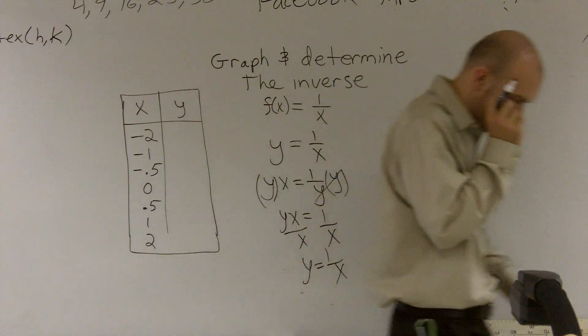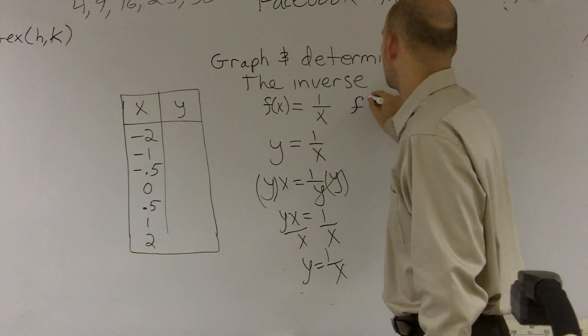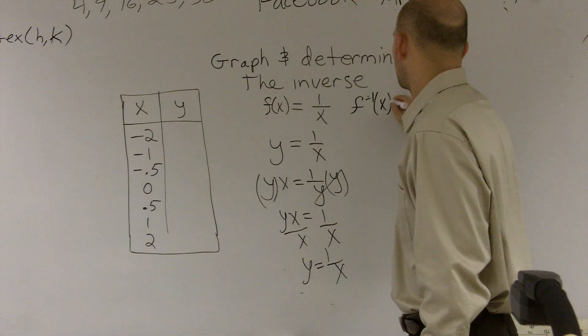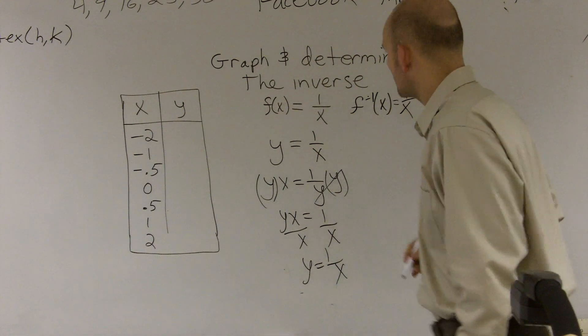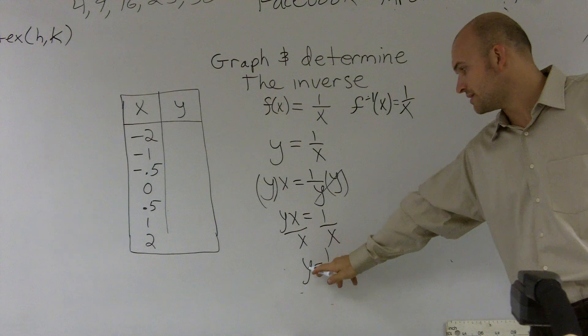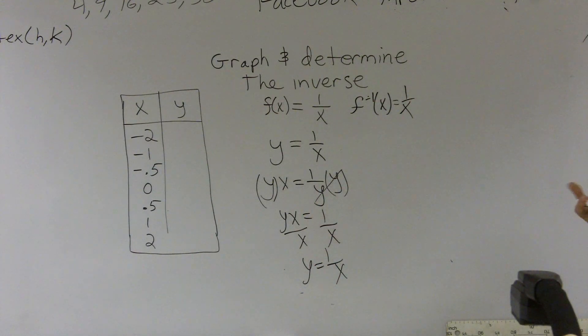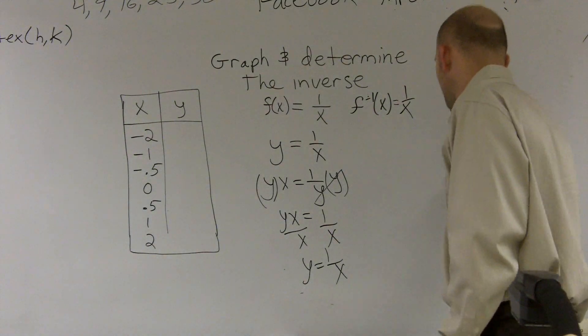So what you guys can see from this is my function has an inverse that's exactly the same. Because we want to make sure once we change this, you want to put it back as to your inverse. So our function and our inverse are exactly the same. So let's take a look at how this is going to be graphed.